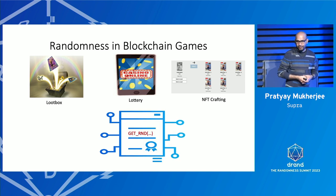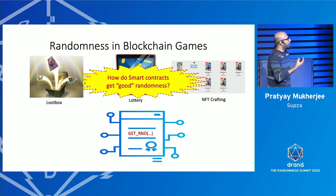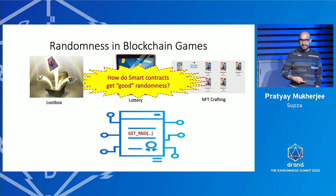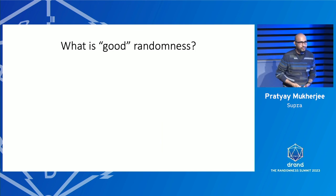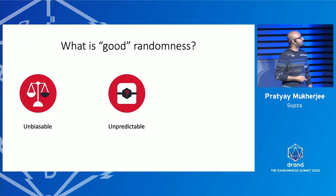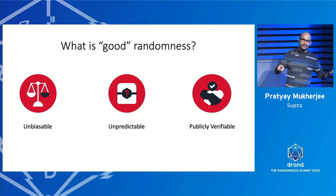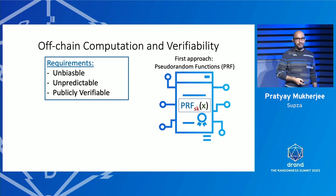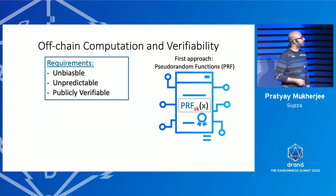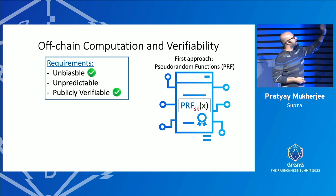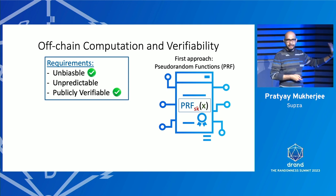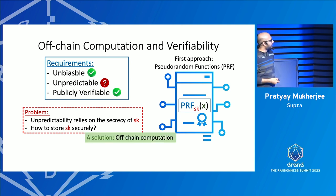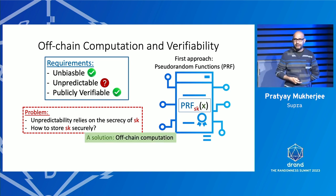The key question is: how do smart contracts get good randomness? The requirements are unbiased output, unpredictability, and public verifiability — pretty standard properties. If you try to use something like a PRF, the obvious problem is the secret key is exposed on-chain. It's slightly surprising it still satisfies some properties, but not unpredictability, because the secret key is exposed. Storing secrets on-chain is a huge problem.